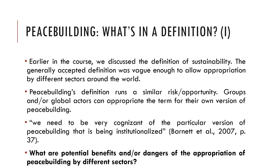Earlier in the course we also discussed the definition of sustainability. The generally accepted definition from the Bruntland report was vague and broad — broad enough to allow appropriation by different sectors around the world. Originally used in the 1987 Bruntland report for sustainable environment, now we see sustainable architecture, sustainable packaging, sustainable fashion, and so on. In some cases the appropriation may be warranted, but in another case it might just become a marketing gimmick — something one has to be wary of.